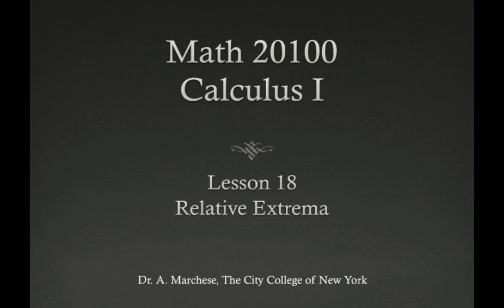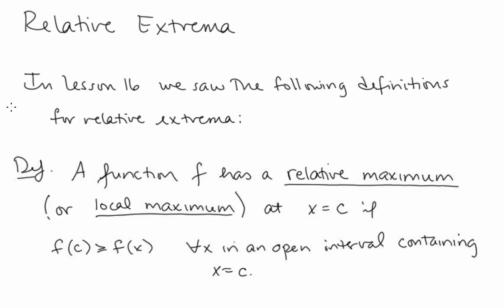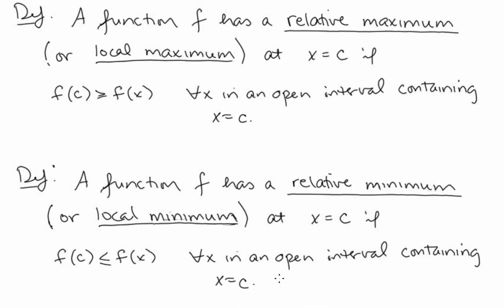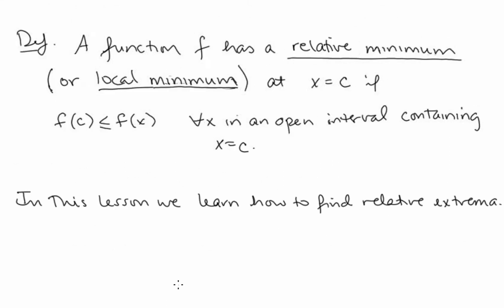This is Lesson 18 in our Calculus 1 series: Relative Extrema. Recall that in Lesson 16, we saw the following definitions. A function f has a relative maximum at x = c if f(c) ≥ f(x) for all x in an open interval containing c. Similarly, f has a relative minimum at x = c if f(c) ≤ f(x) for all x in an open interval containing c. In this lesson, we're going to learn how to find relative extrema.